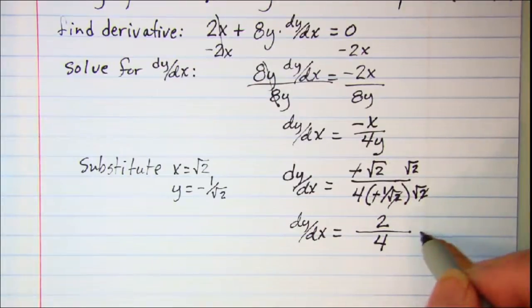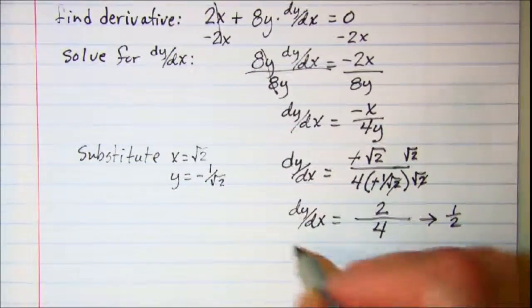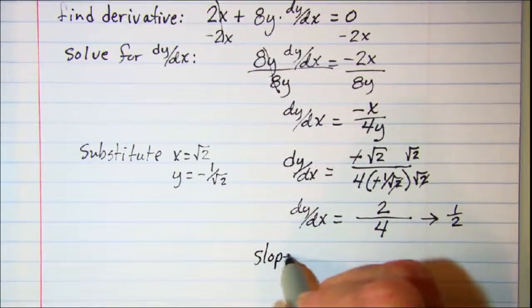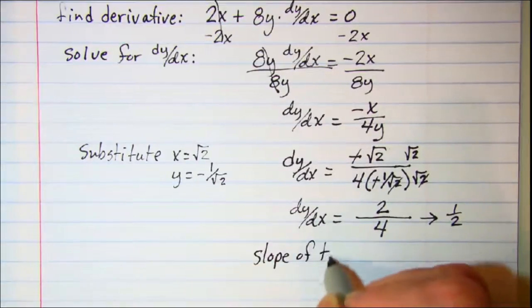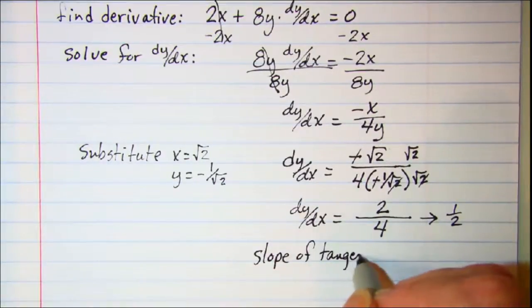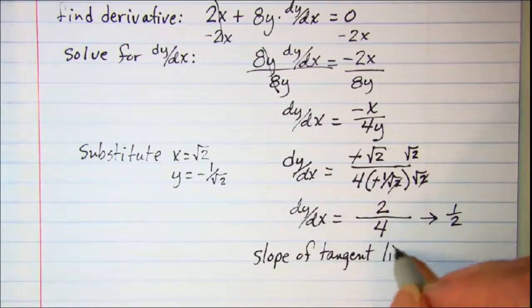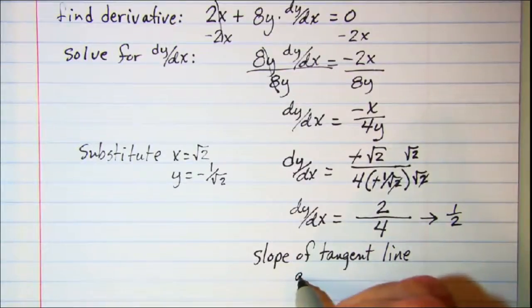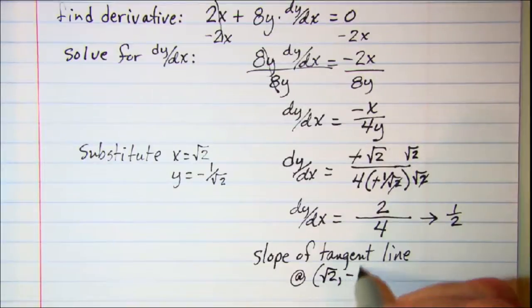So this simplifies to 1 half which means then the slope of our tangent line at root 2 negative 1 over root 2 is 1 half.